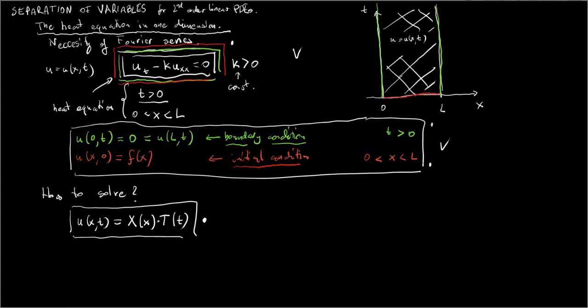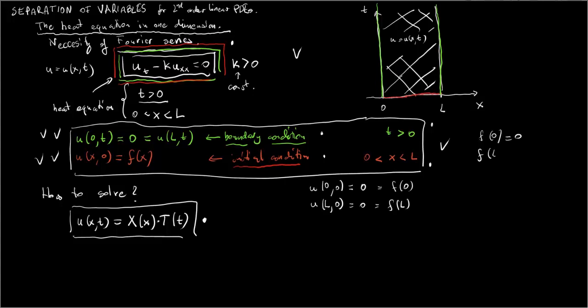One thing I should mention is that if we have our boundary conditions and initial conditions, there should be some compatibility between them. In particular, u(0,0) must be 0 because of the boundary condition, and on the other hand it must be f(0) because of the initial condition. So f(0) must equal 0.